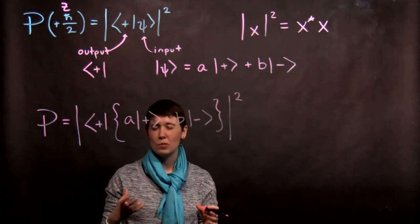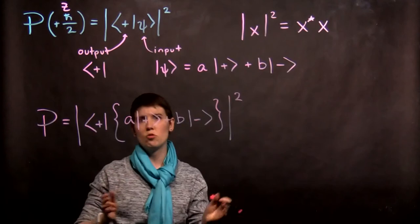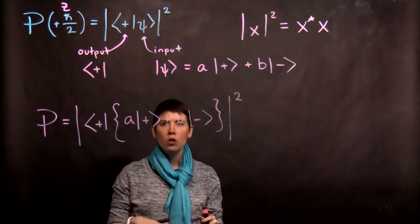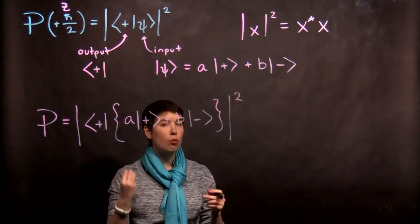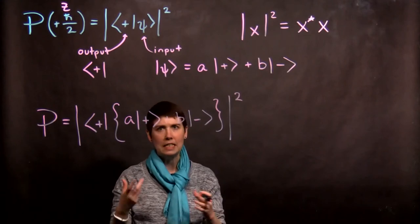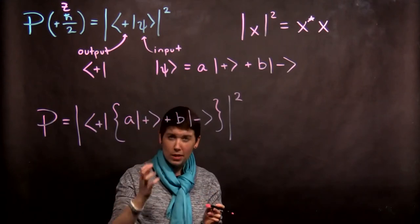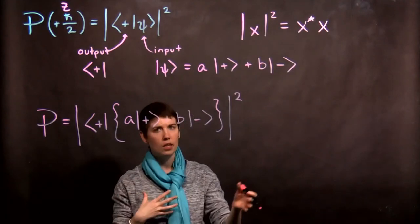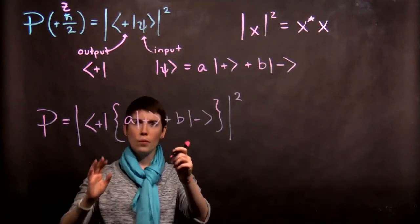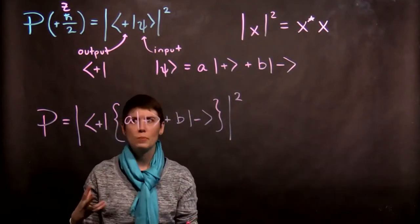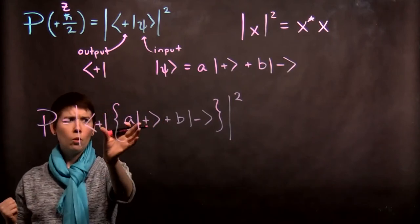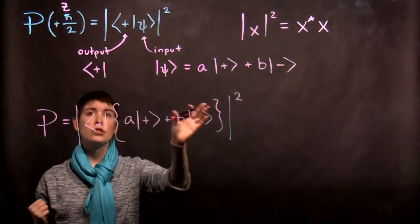And square. So one common mistake I see students make is that they drop the magnitude or they drop the square. So don't do that. So now we can think about the properties of our vector spaces. And again,